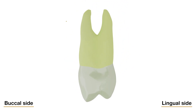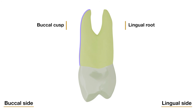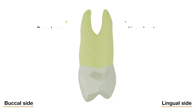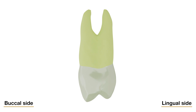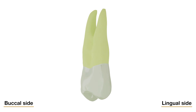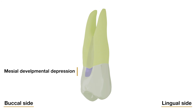Most maxillary first premolars have two roots, one buccal and one lingual, which can be appreciated from the mesial aspect. The buccal outline of the buccal root above the cervical line is straight with a tendency toward a lingual inclination, and the tip of the buccal cusp is directly below the center of the buccal root. The lingual outline of the lingual root is rather straight above the cervical line, and the tip of the lingual cusp is on a line with the lingual border of the lingual root. The root trunk is long on this tooth, making up more than half of the root length, and the bifurcation begins at a more occlusal point mesially than distally. Another distinguishing feature is a marked depression on the mesial surface of the crown, immediately cervical to the mesial contact area, bordered buccally and lingually by the mesiobuccal and mesolingual line angles, called the mesial developmental depression. This mesial concavity continues apically beyond the cervical line and joins a deep developmental depression between the roots, ending at the root bifurcation.